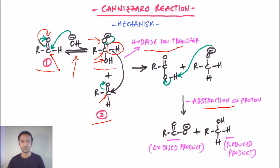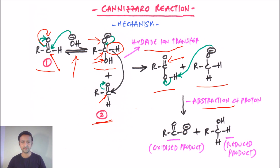After the hydride transfer, two species are obtained. From the first aldehyde anion we get a carboxylic acid structure with a double bond between carbon and oxygen. From the second aldehyde molecule we get an alkoxide species — an O⁻ bearing two hydrogen atoms on the carbon.